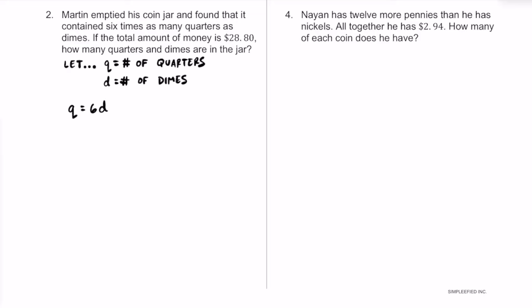For the second piece of information, we know the total amount of money is $28.80. Quarters are worth 25 cents each, so 0.25Q is the total value of the quarters. Plus dimes at 10 cents each gives 0.10D. Adding the value of the quarters and dimes equals $28.80.